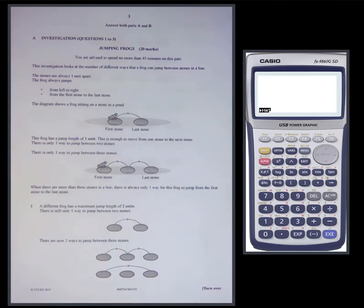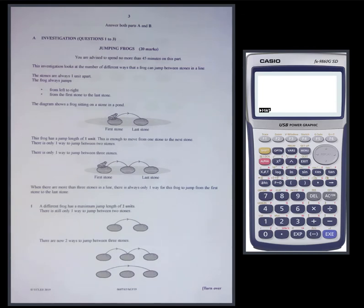Here is an investigation paper, quite a recent one from June 2019, about frog jumping — seeing sequences and seeing patterns. As all investigations are about patterns, but they're not all about frog jumps.